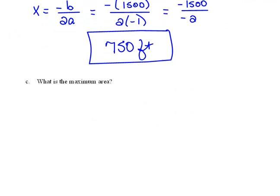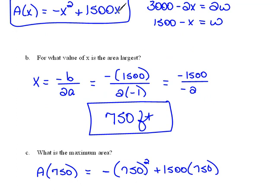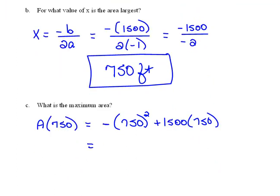Well, the last part of the question says, what is that maximum area? So now we can go ahead and we can evaluate the area function for an X value of 750. So that would be the opposite of 750 squared plus 1,500 times 750. Remember, I'm just filling in an X value of 750 in my function. And then we can plug this in the calculator, and we should get 562,500 square feet as an area.